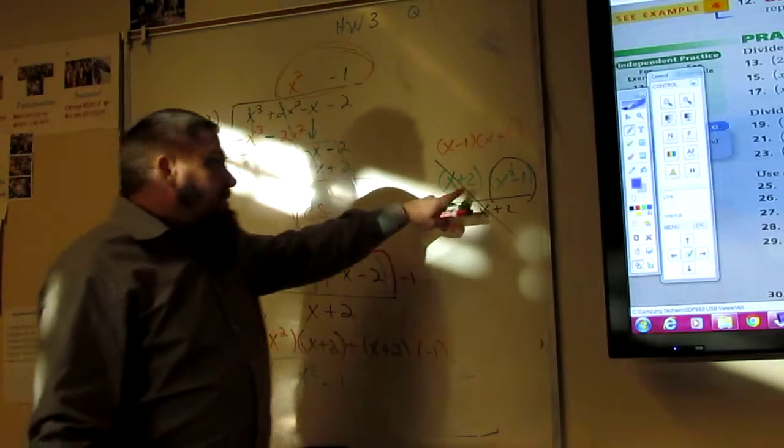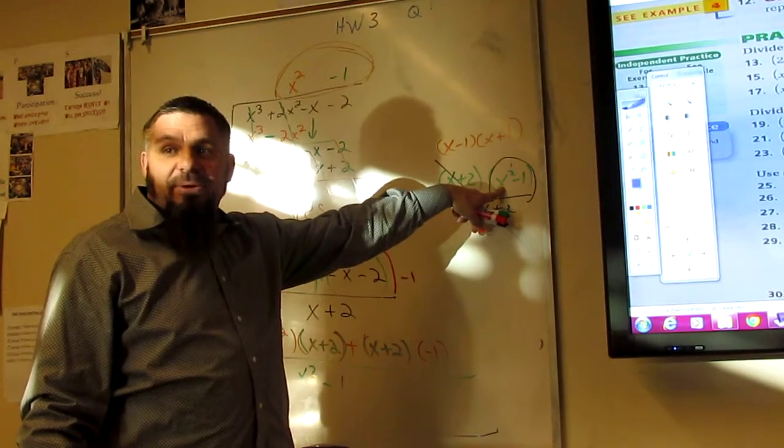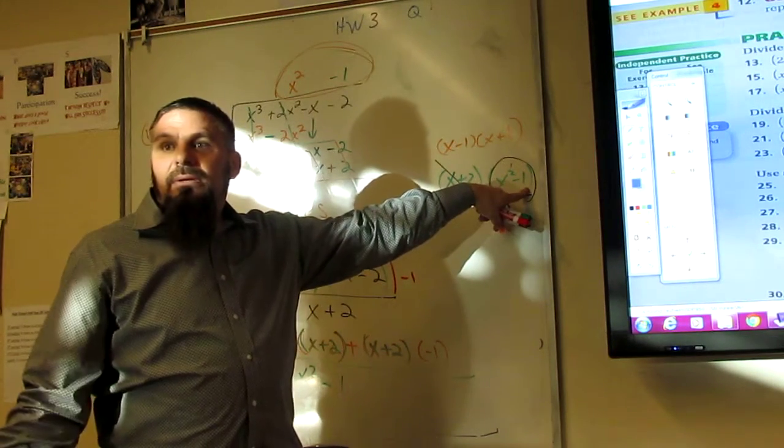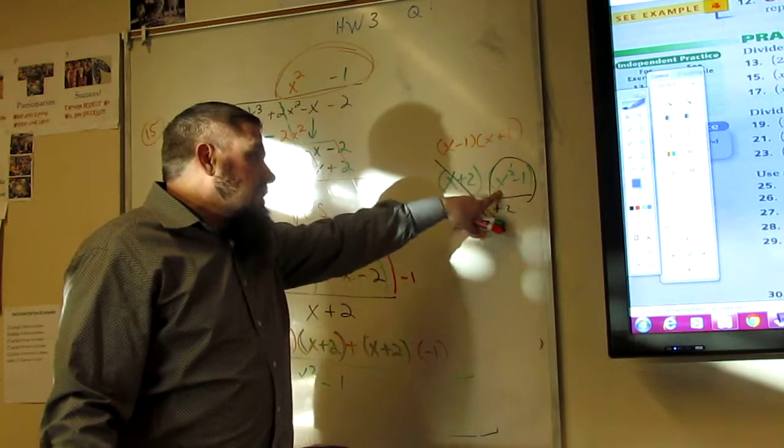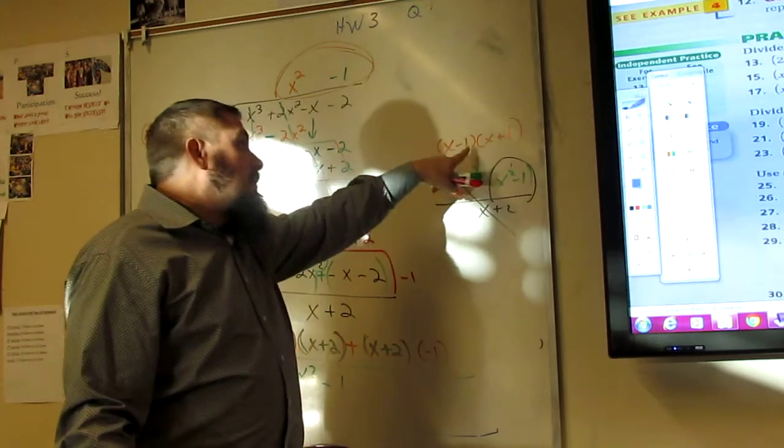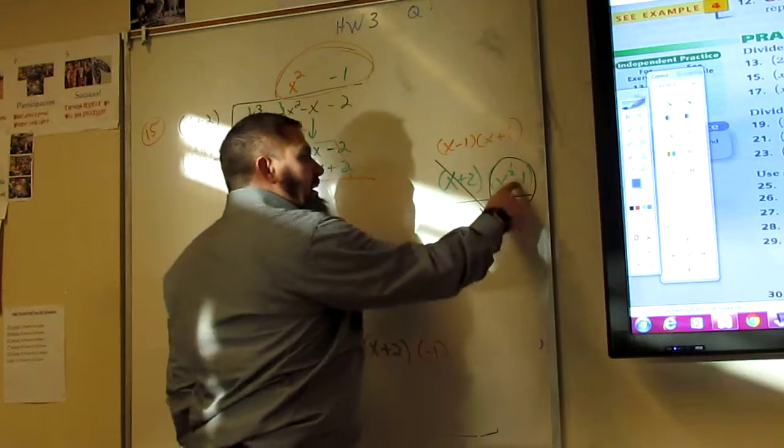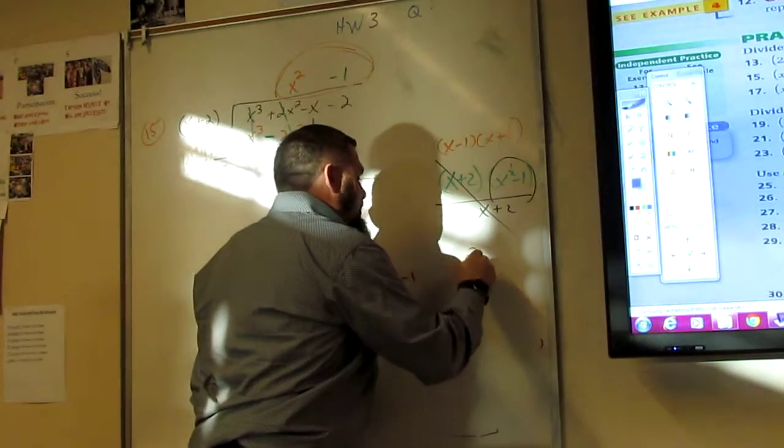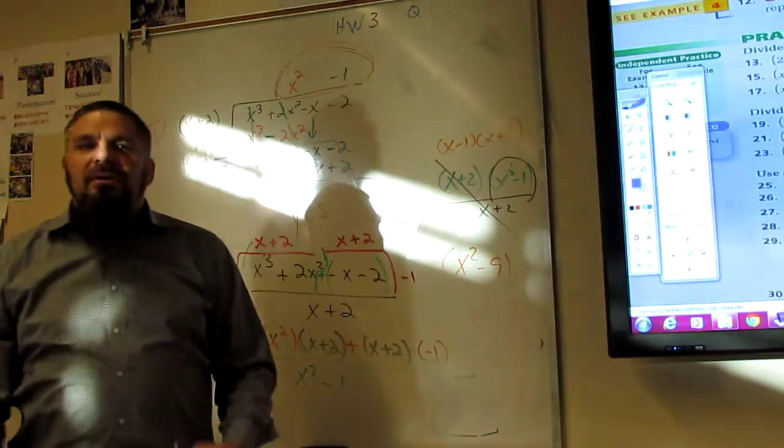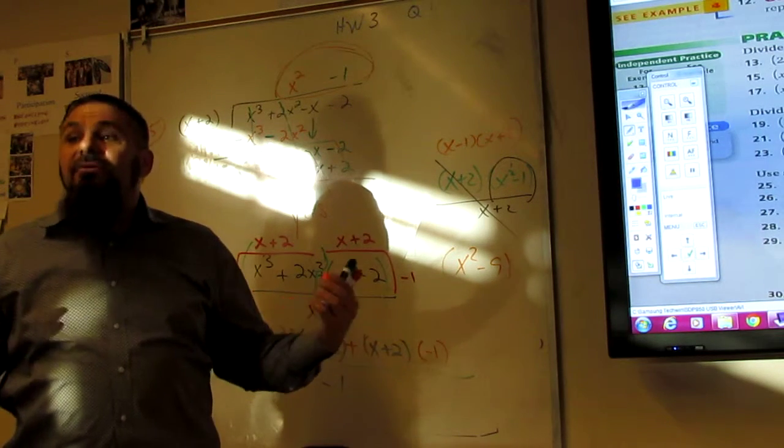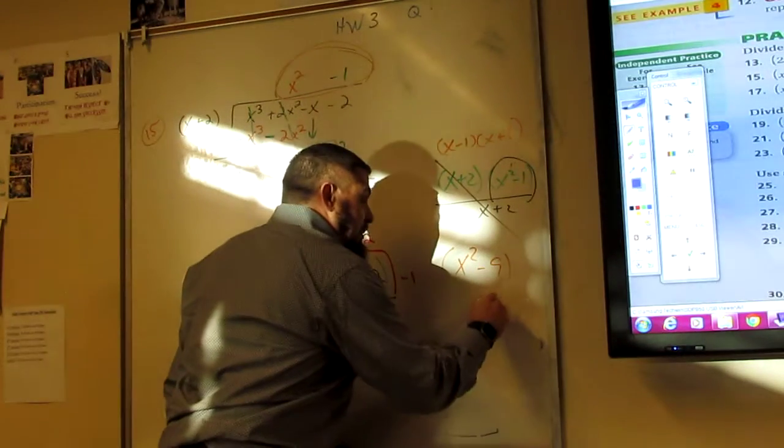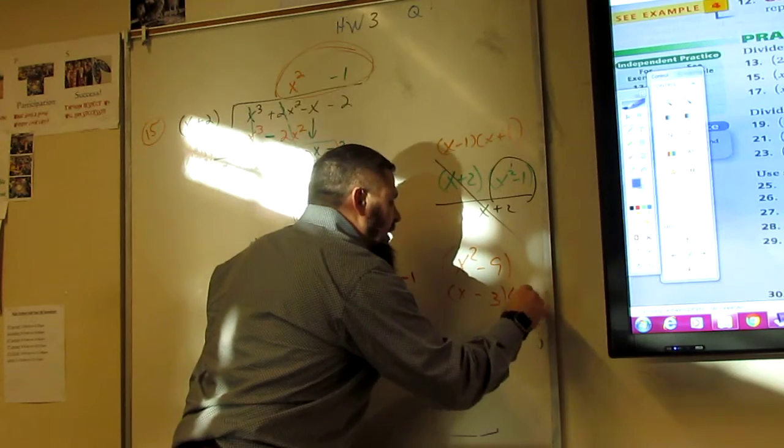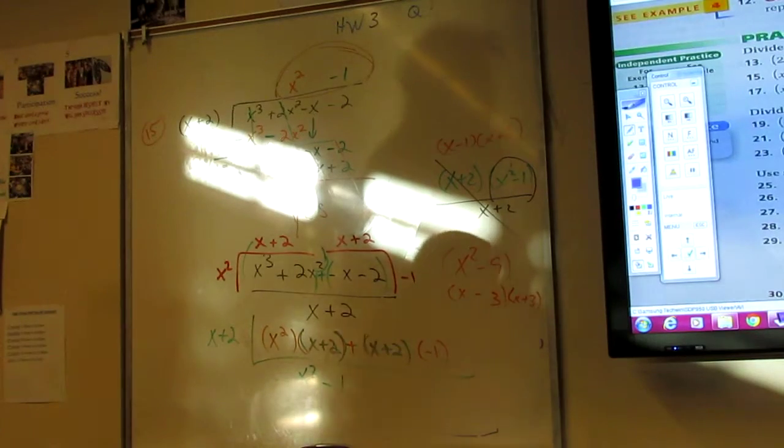But, what you're going to learn here is you take the square root of this. Is this a perfect square? Yeah, x squared is a perfect square. Is 1 a perfect square? 1 times 1 is 1. So, I take the square root of this, x. The square root of this, 1. And I write the conjugate. All the conjugate is is the opposite of minus. Plus. And it's really easy stuff. If I got x squared minus 9, what's the square root of 9? 3. Minus x. What's the conjugate? That's it. This is not hard stuff. We'll learn it quickly. This is everything.